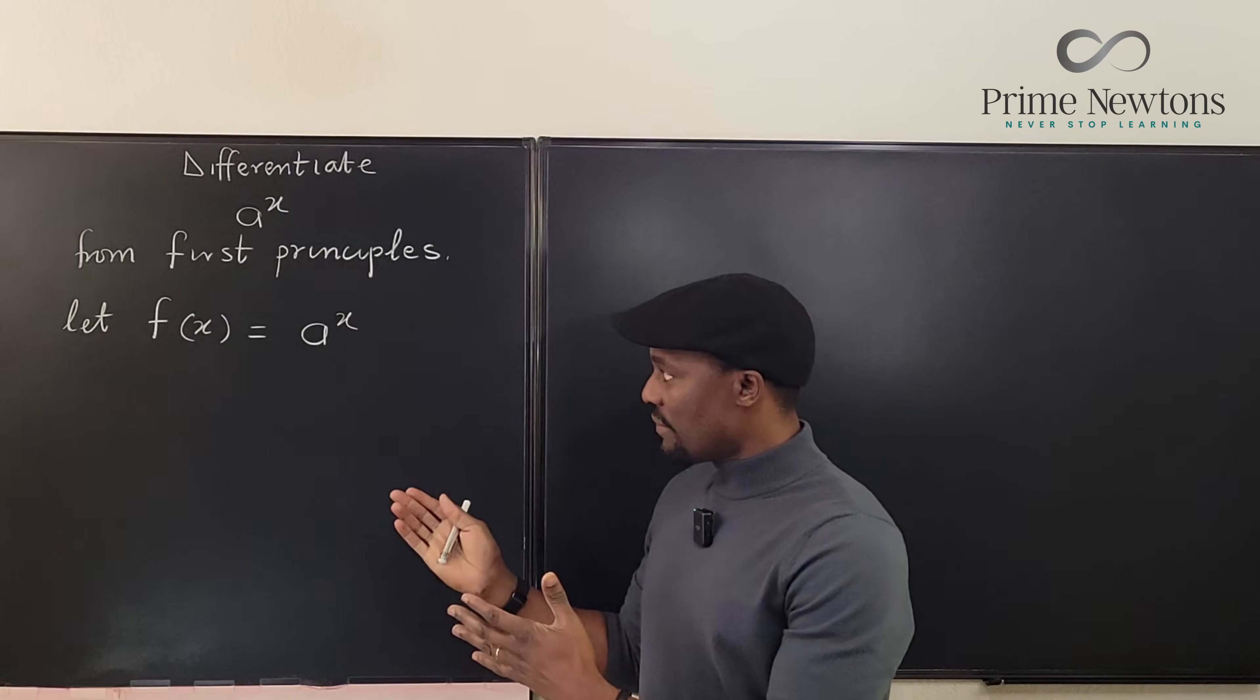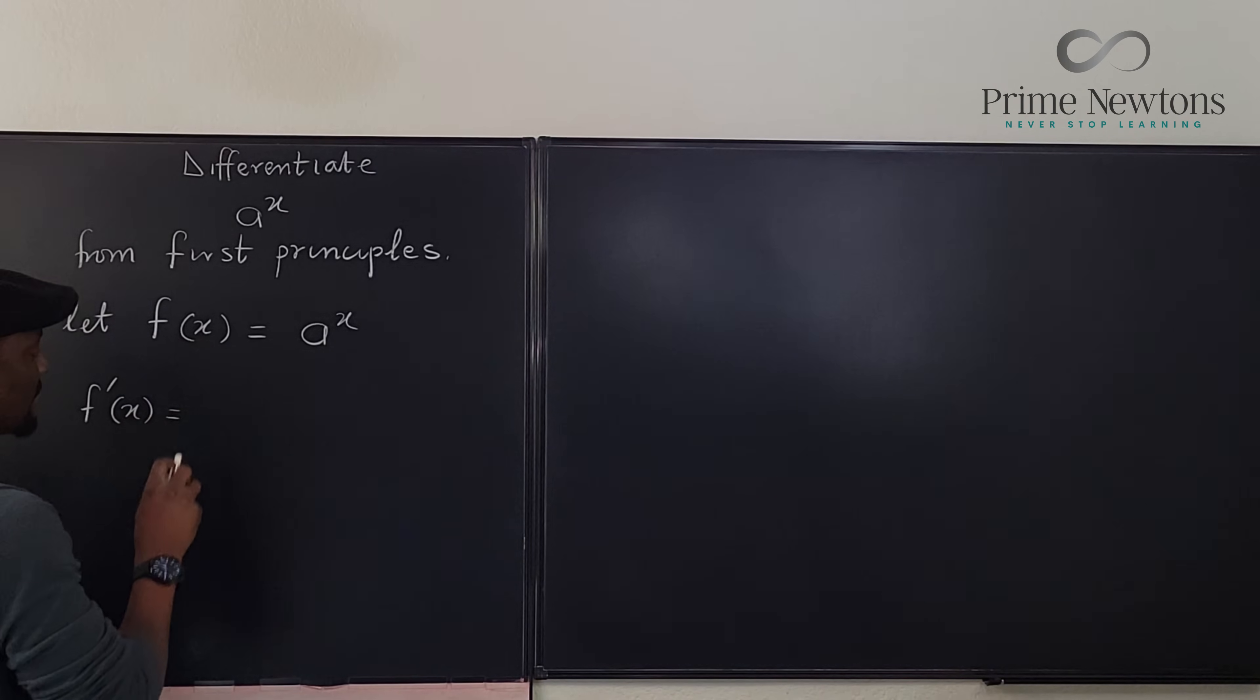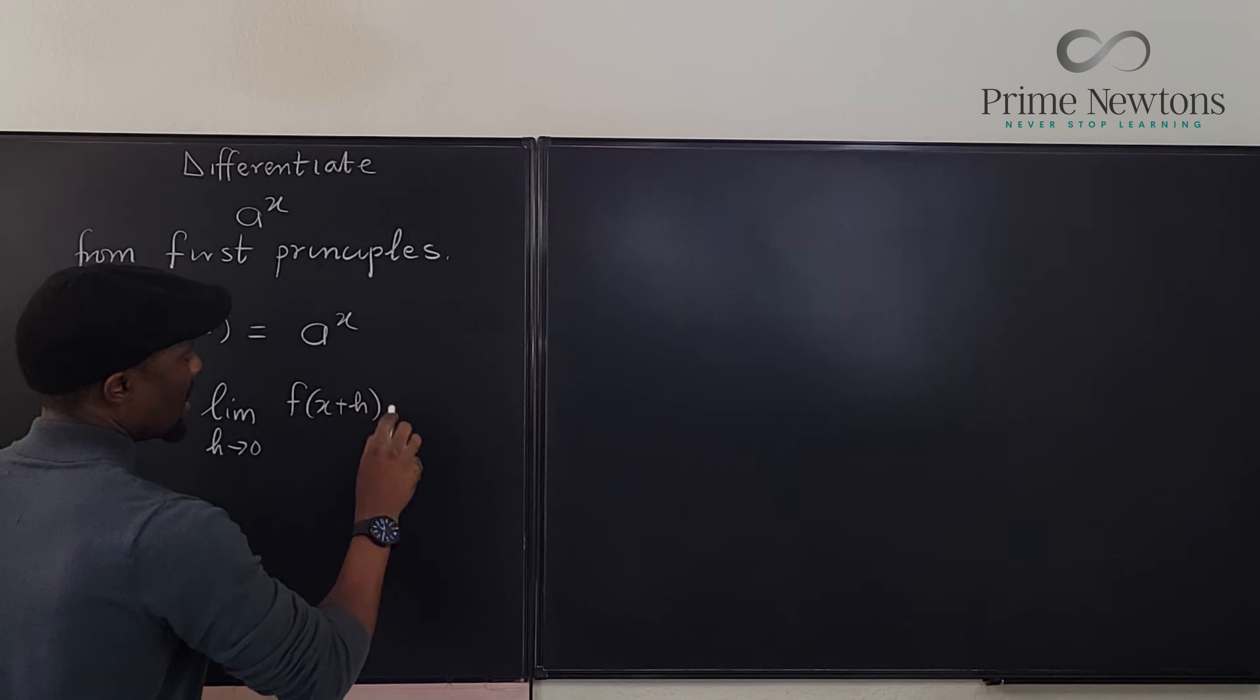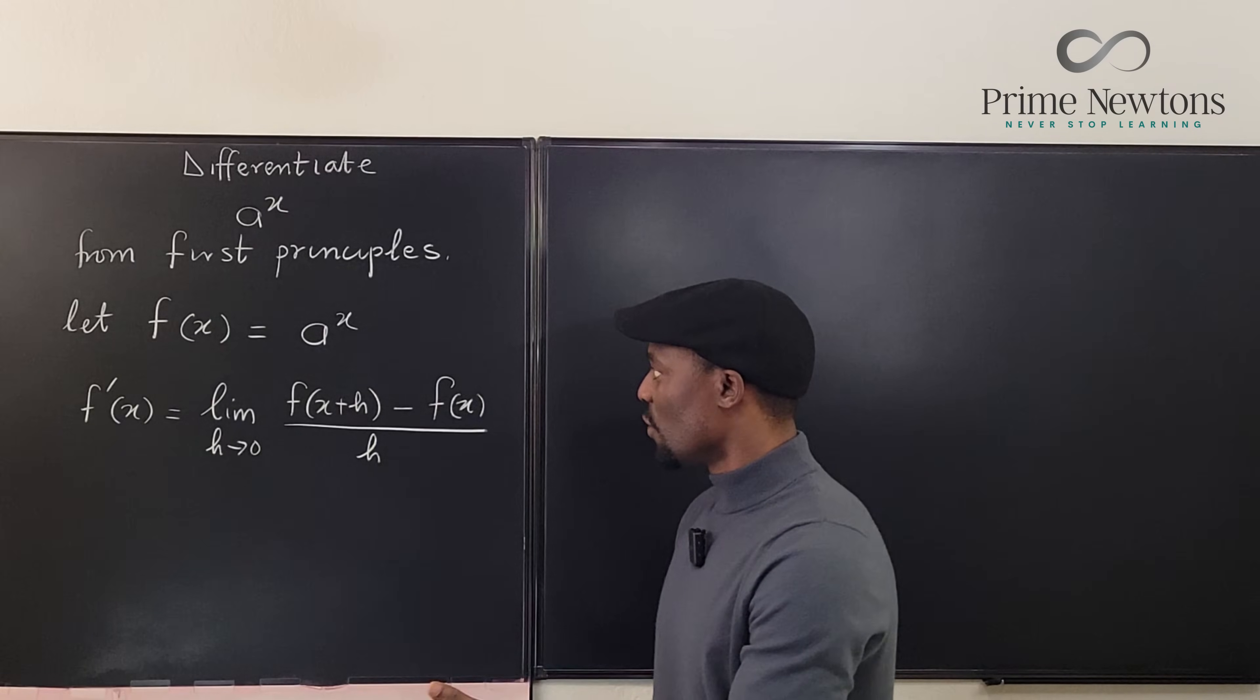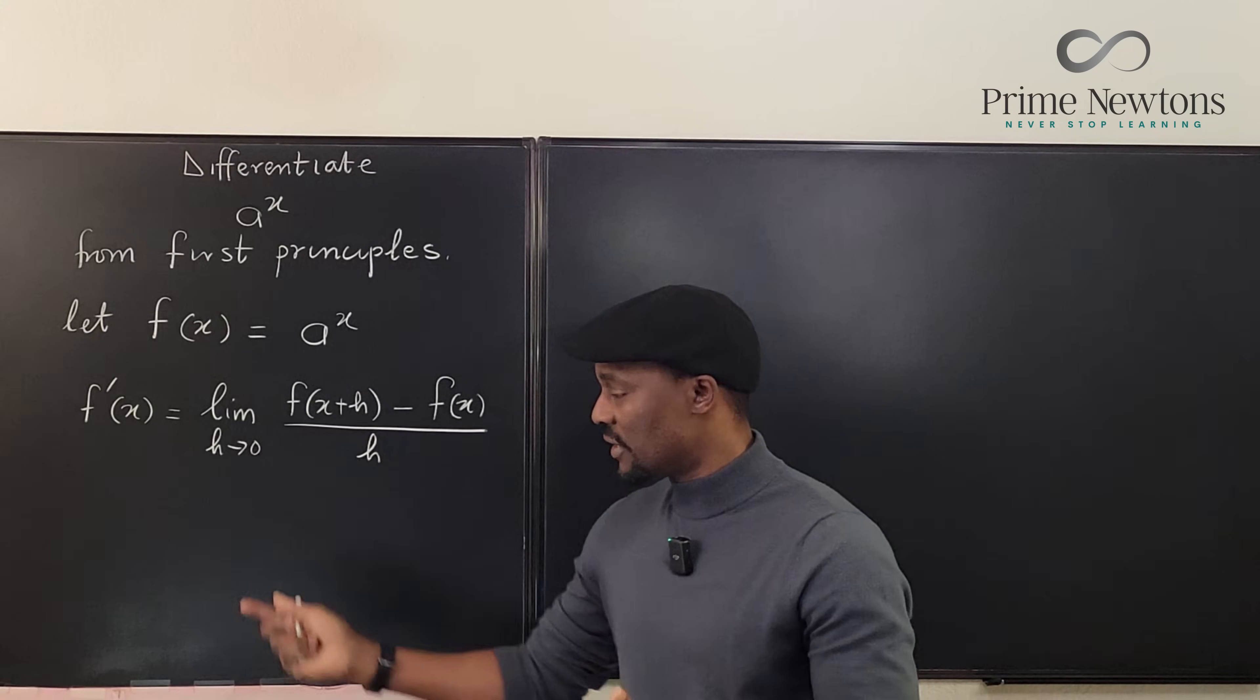Now if f of x is a to the x we know that f prime of x from the definition of the derivative is the limit as h approaches zero of f of x plus h minus f of x all divided by h. Do you recall this? This is what we're going to apply to this function. So let's go.